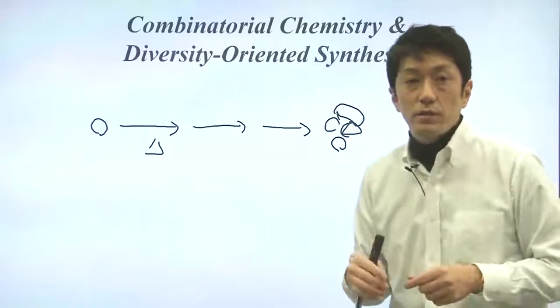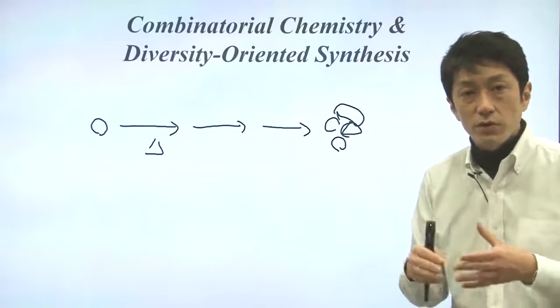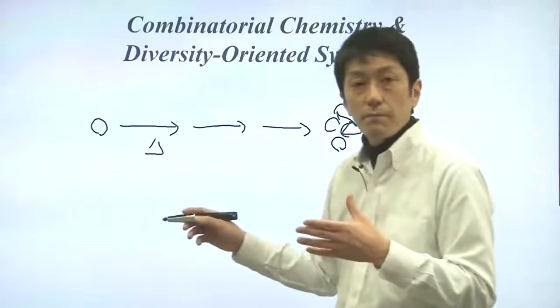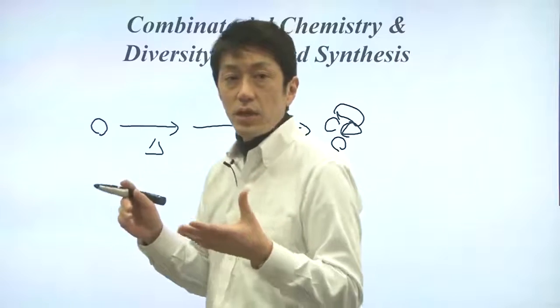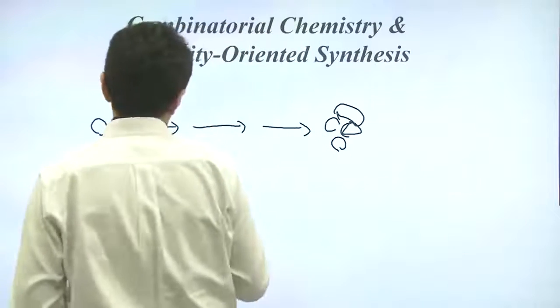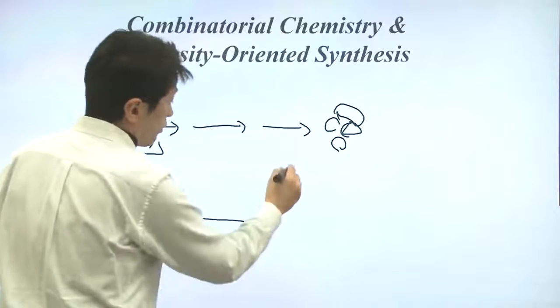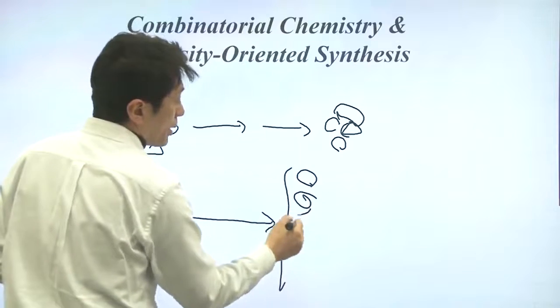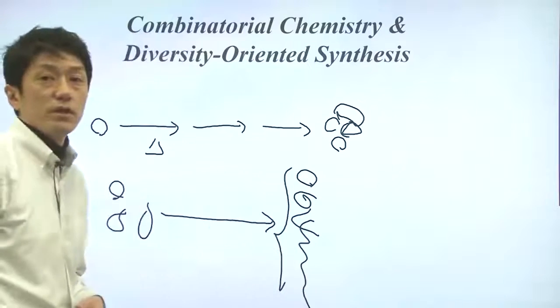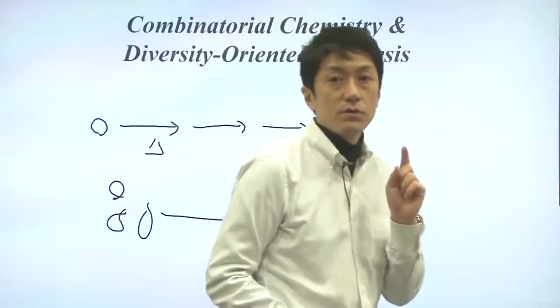In contrast, the combinatorial chemistry focuses on creating various kinds of molecules at once. If you start with something else then there, but the goal is to get many different kinds of molecules. So that is the concept.